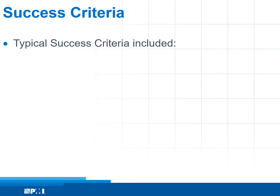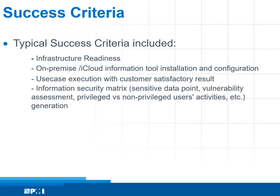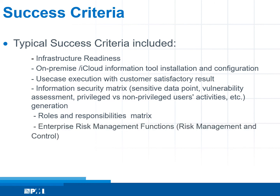The typical project success criteria include infrastructure readiness (on-premise or cloud), information tool installation and configuration, use case execution with customer-satisfactory results, and information security metrics such as sensitive data points, vulnerability assessment scan results, privileged versus non-privileged user activity, roles and responsibility metrics, enterprise risk management function, and risk management and control.